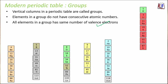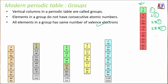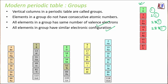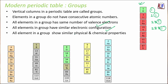Considering group one: hydrogen has configuration 1, lithium is 2,1, sodium is 2,8,1, and potassium is 2,8,8,1. All have one valence electron. Elements in a group share a similar pattern of electronic configuration, and since they have similar configurations and the same number of valence electrons, they also have similar physical and chemical properties.